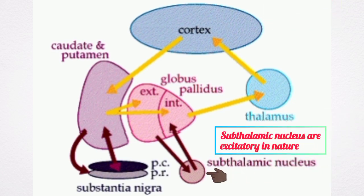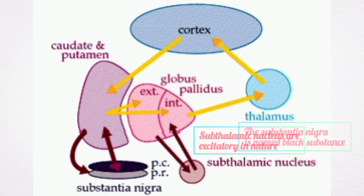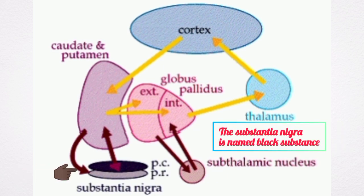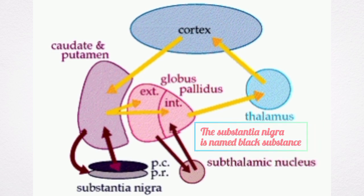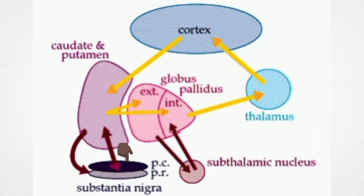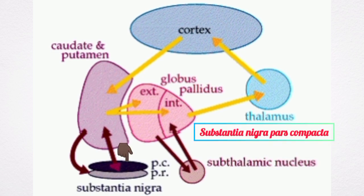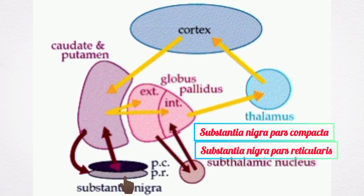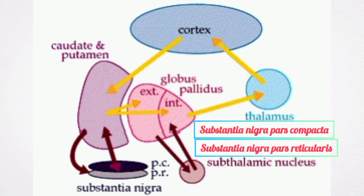The subthalamic nucleus is mainly excitatory in nature. The substantia nigra is named black substance because of its high level of melanin. It consists of two parts: the substantia nigra pars compacta and the substantia nigra pars reticularis.